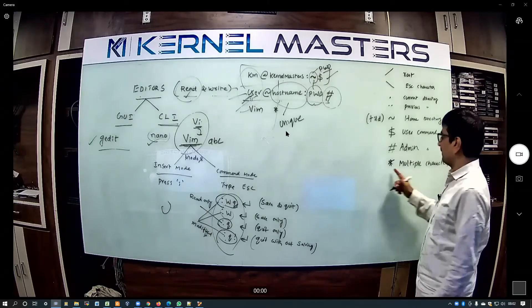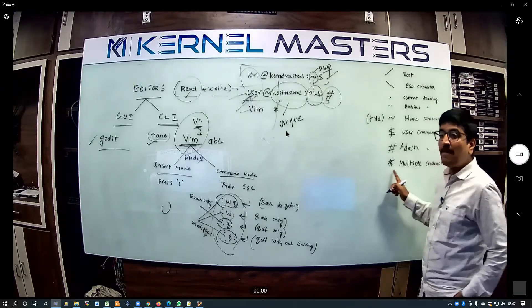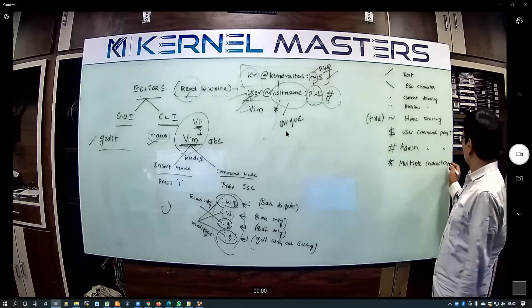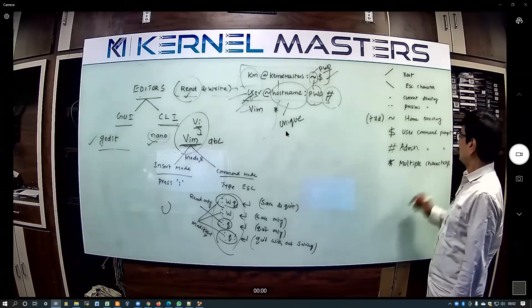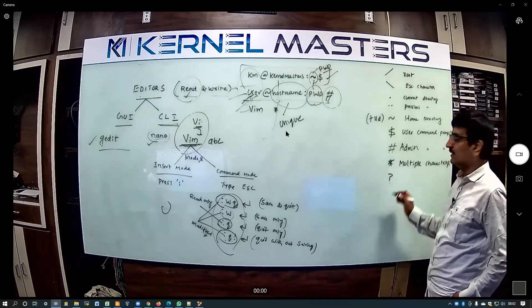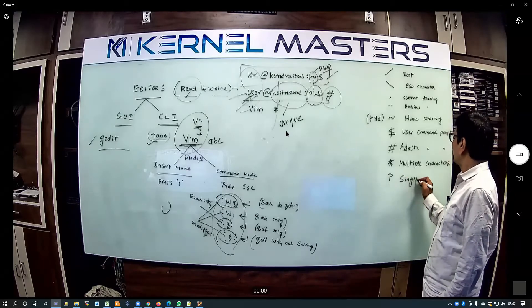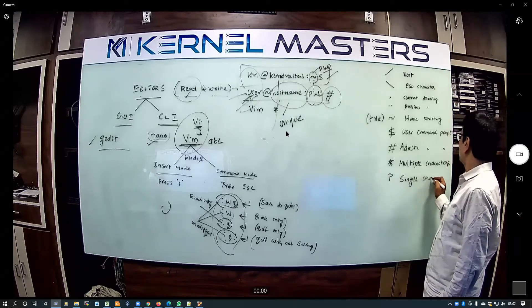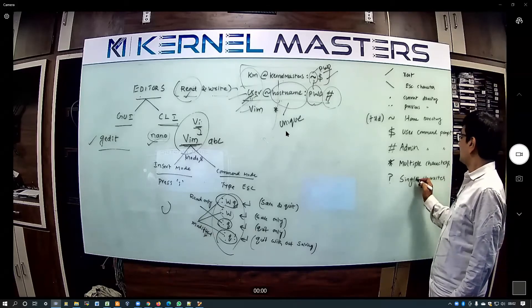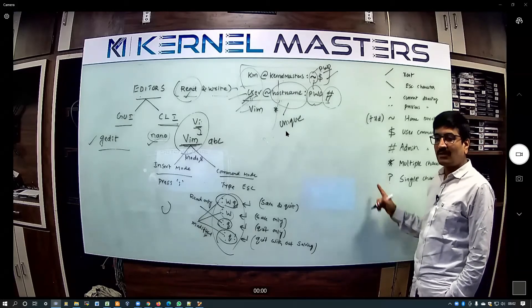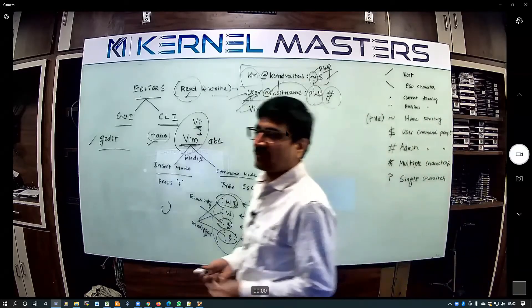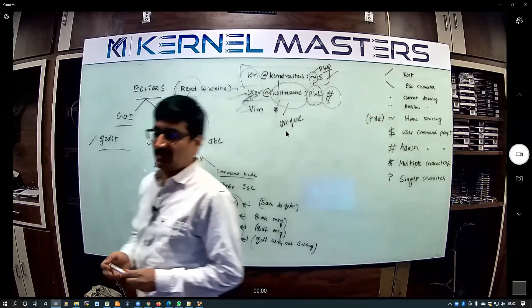You start telling me about multiple characters and the question mark. Star indicates multiple characters, question mark indicates a single character. Now two wildcards are there — for example you can see.